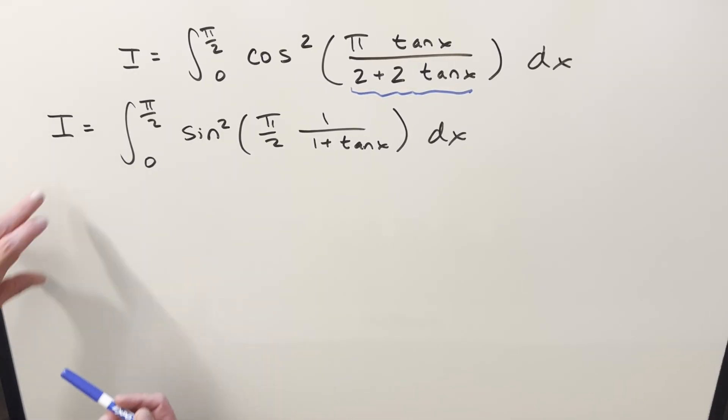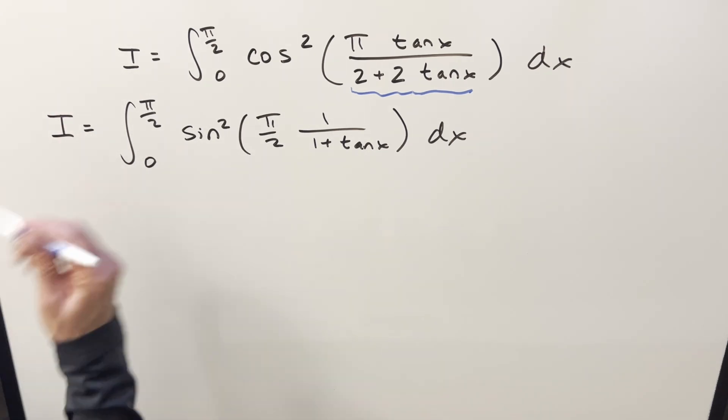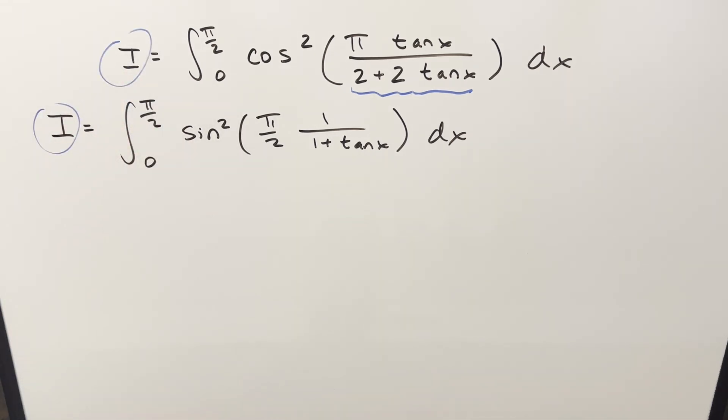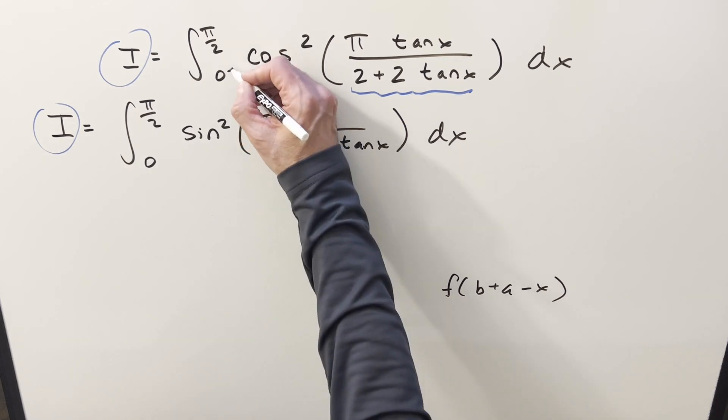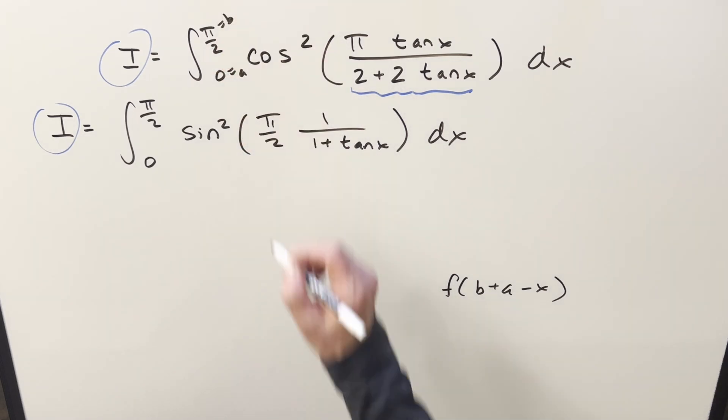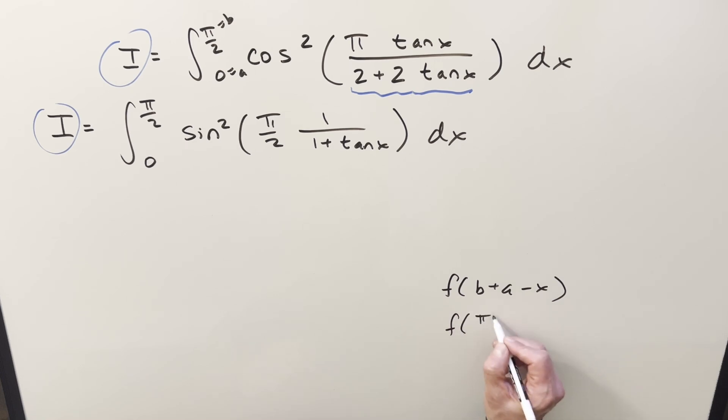Okay, now what we've done here is I put labels on this integral and our original integral. These are both we're calling these i. Then from here, I want to go back to our first integral, and I just want to use King's principle on it, where what we're going to have to find is our value for f of b plus a minus x in order for this to work. In this case, this is our a, this is our b. So b plus a is just π/2. So what we need is f of π/2 minus x.